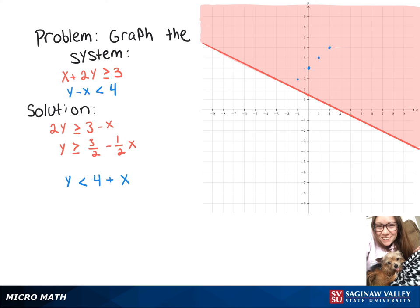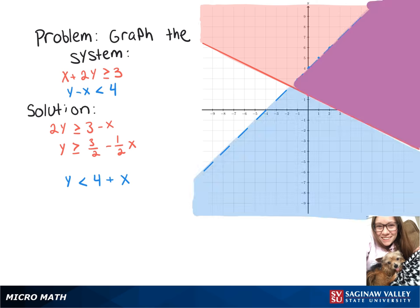And then because it's less than, everything below our line is going to be shaded. So everything you see in that purple region would be a solution to this system.